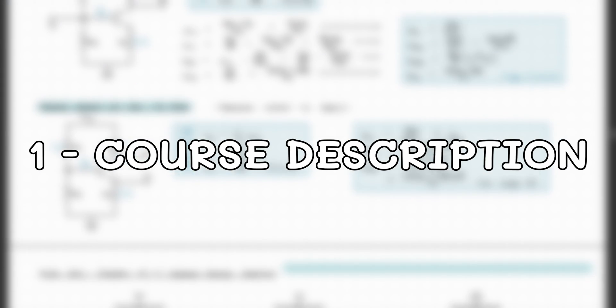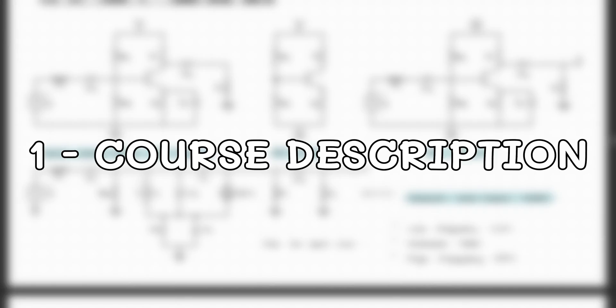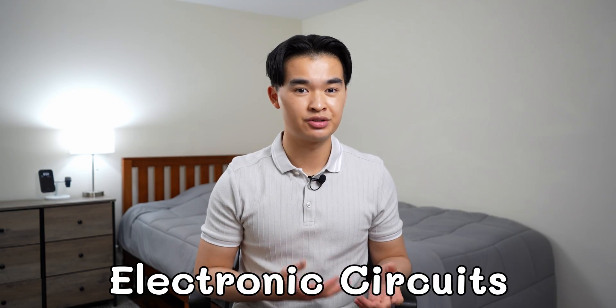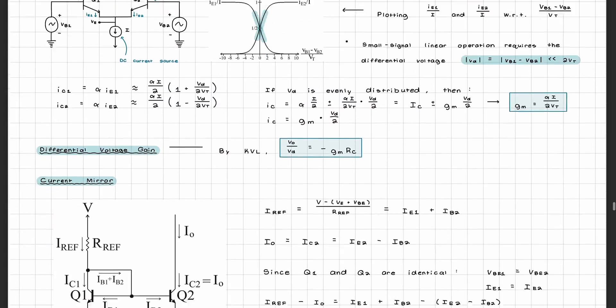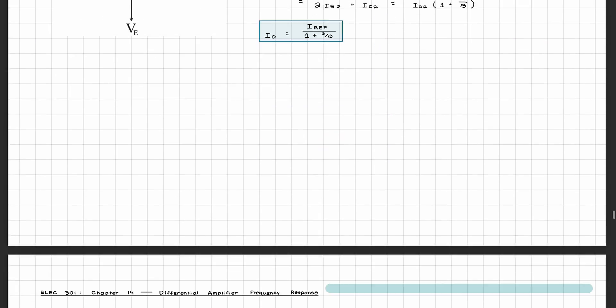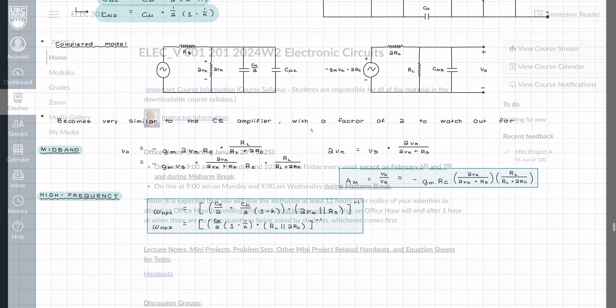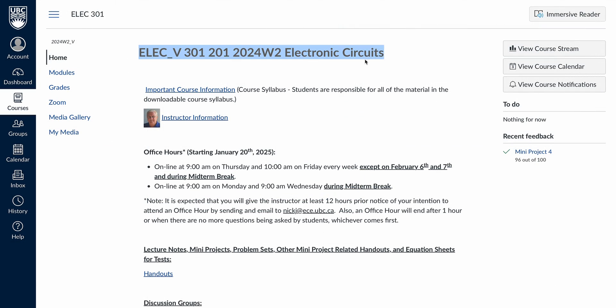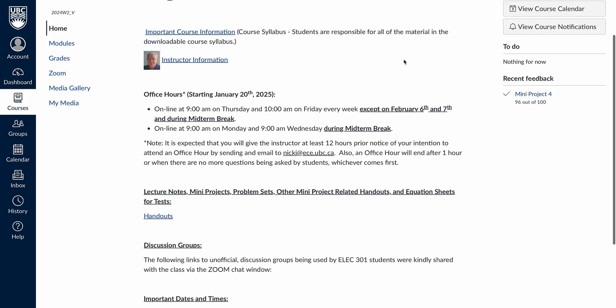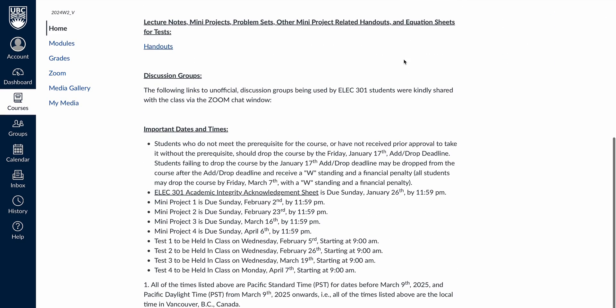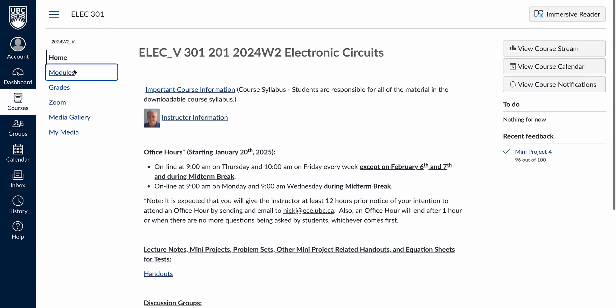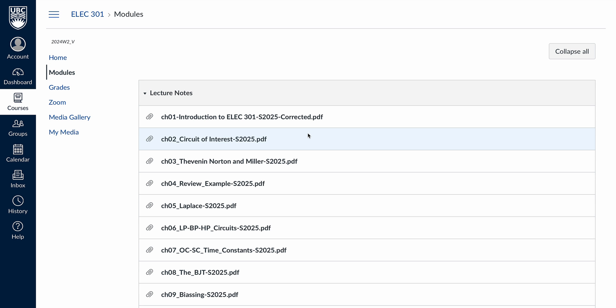Alright, so what is ELEC 301 all about? In this course you will learn more about electronic circuits, expanding on the circuits knowledge that you've accumulated from previous circuit analysis courses like ELEC 201 and 202. You'll cover concepts such as the frequency response of an amplifier, how to bias a transistor, how differential amplifiers and op amps work under the hood, feedback amplifiers and active filters.